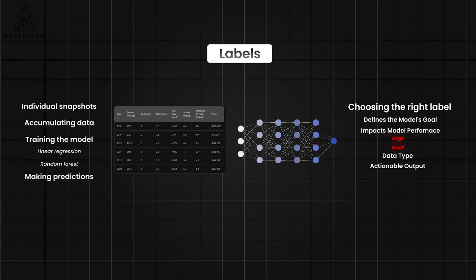The label should provide practical information for your use case. Predicting 'expensive' or 'cheap' might be subjective and not very useful for tasks like real estate appraisals. Ideally, you should have enough data points with clear labels to train the model effectively. If certain labels are difficult or expensive to obtain, it might be best to choose a more attainable alternative. By carefully considering these factors, you can choose a label that sets your supervised learning model up for success.